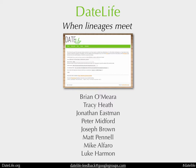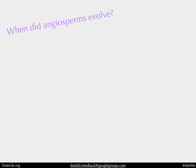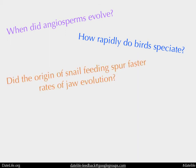What's the goal? What are we trying to achieve? There are many questions for which you need a tree with branch lengths proportional to something — the number of generations or time. When did angiosperms evolve? How rapidly do birds speciate? Does the origin of snail feeding spur faster evolution of jaws? Is brain size correlated with body size? How much history will we lose when a group of organisms goes extinct? For all of these, you need a tree with branch lengths that make sense.